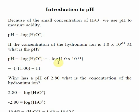pH is the negative log of the concentration of hydronium. You take the log value of this and take the negative number, and you end up with a pH of 11. Log is just a function on your calculator — it's a button. You enter in 1.0 times 10 to the minus 11th, and then you hit the log button. The calculator should present negative 11, and then with the pH, you take the negative of that to get 11. Log is really just a function on your calculator.